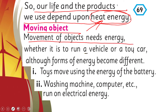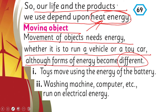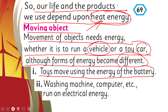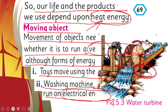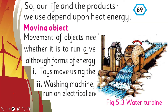Movement of objects needs energy, whether it is to run a vehicle or a toy car, although the forms of energy become different. Kisi bhi cheez ko move karne ke liye — chahe wo vehicle ho ya toy car — unko bhi energy ki zarurat hoti hai. Toys move using the energy of batteries. Washing machine, computer, etc. run on electricity. Here you can see a water turbine — it moves with the help of water energy and generates electricity.